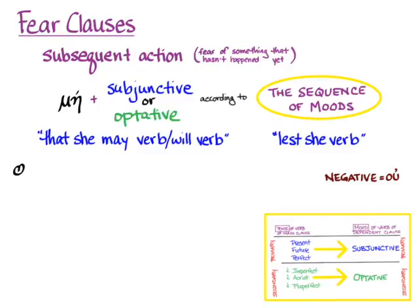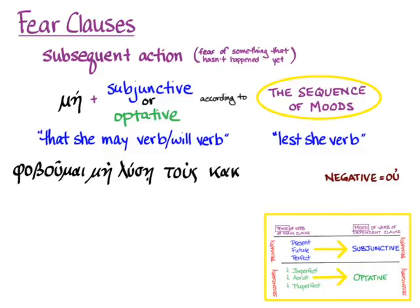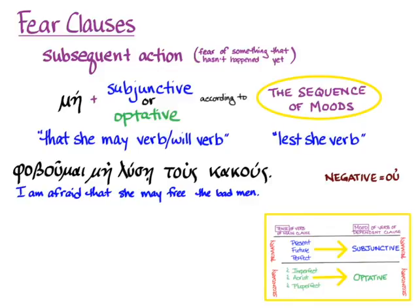Here's a first example: φοβοῦμαι μή λύσῃ τοὺς κακούς — 'I am afraid that she may free the bad men.' We have φοβοῦμαι as the verb of fearing, the conjunction μή, λύσῃ in the subjunctive because we're in primary sequence, and τοὺς κακούς as the direct object. In modern idiom we can say 'I am afraid that she will free the bad men.'